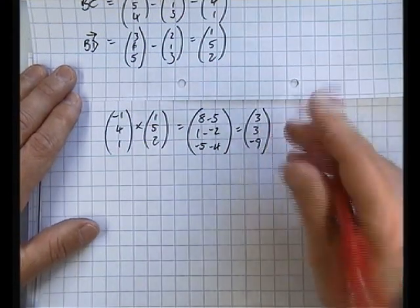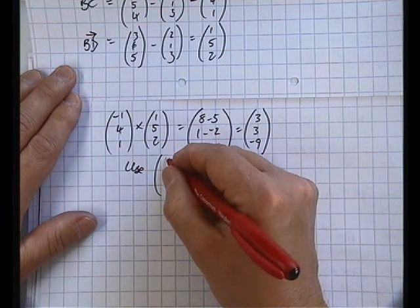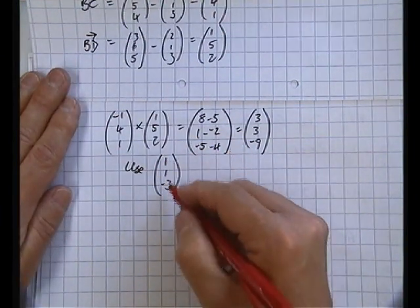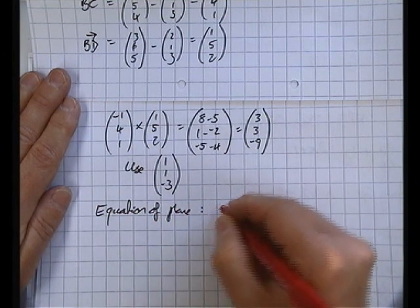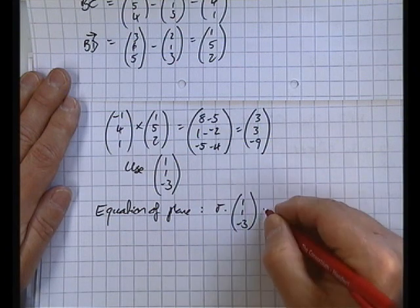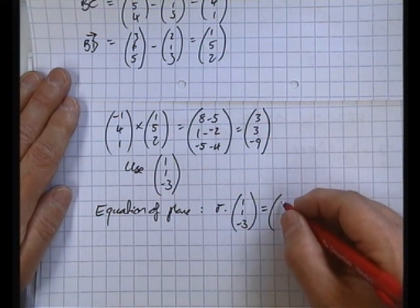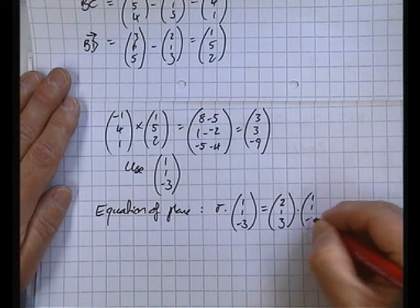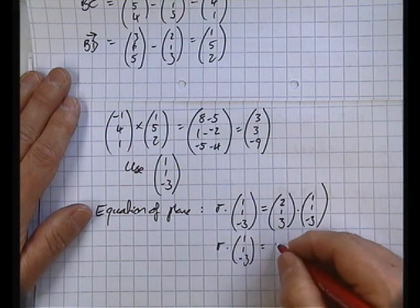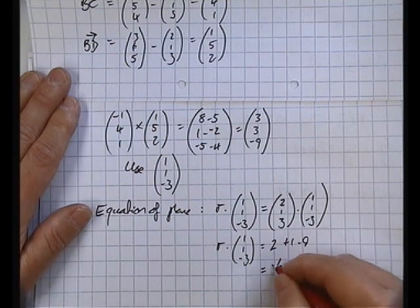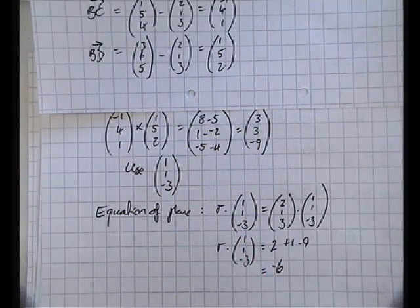Now I need any, that vector (3, 3, -9) is perpendicular to my plane. I can use any multiple of this. It will still be perpendicular. So I'm going to use the much simpler version of (1, 1, -3) instead. So that's my perpendicular to the plane. My equation of the plane is then going to be r dotted with that normal, is equal to any point on the plane will do. So I'm going to use B, and that's going to be (2, 1, 3) dotted with (1, 1, -3). And that simplifies down to r dot (1, 1, -3) equals 2 plus 1 minus 9 equals -6. So my equation of the plane BCD is r dot (1, 1, -3) equals -6.